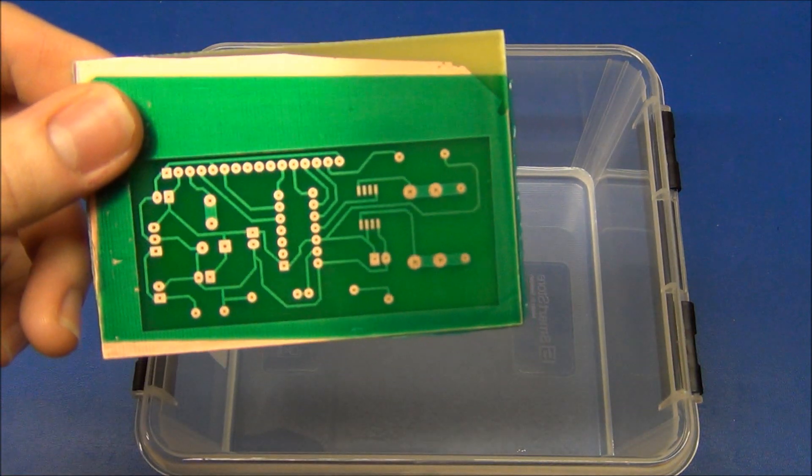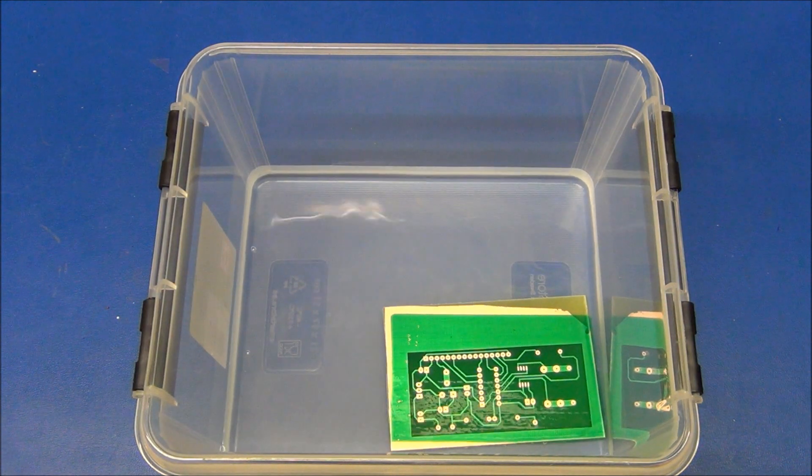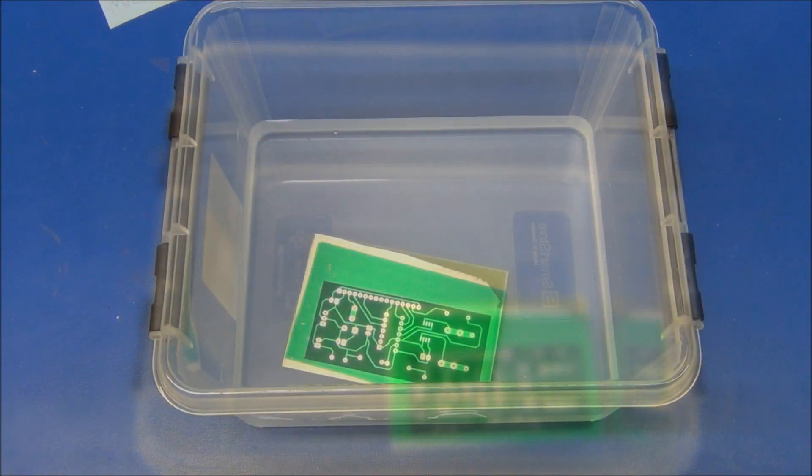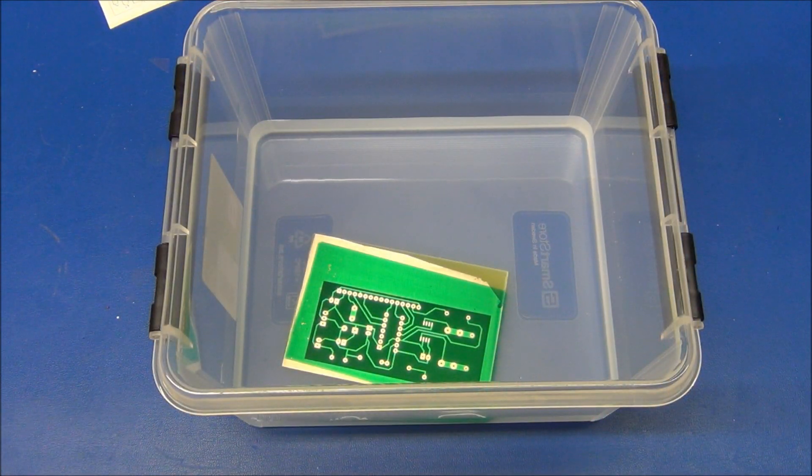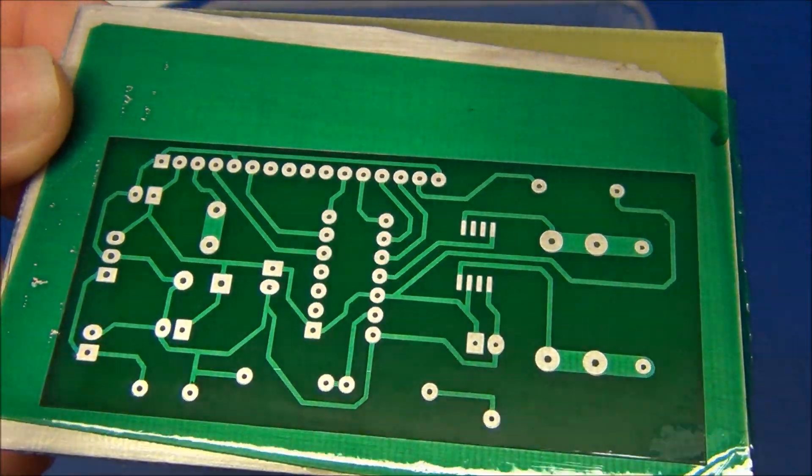Once your board is hardened, place it in a tin plating solution to plate it with tin. This will prevent oxidation of the copper. When the board is done, remove it and clean with water. And once tinned, your board should look like this.